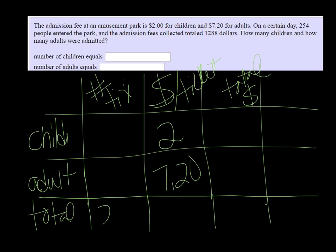Total number of tickets were 254. If there were 254 people in the park, then they must have sold 254 tickets. Unless some people snuck in, but hopefully that didn't happen. And we know the total amount made was $1,288. So we don't know how many children were there, so we'll call that X.